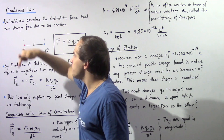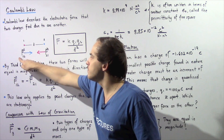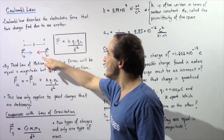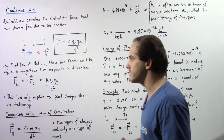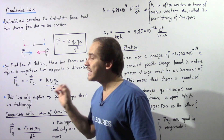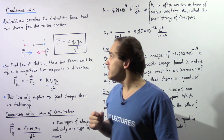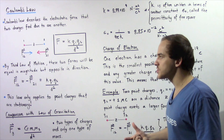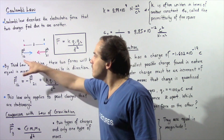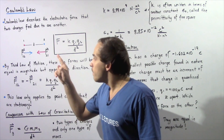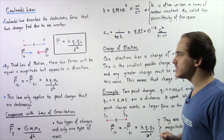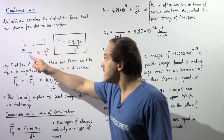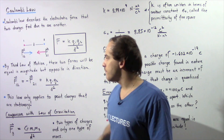The force that point charge 1 will feel as a result of point charge 2 is given by this quantity, and the force that point charge 2 feels due to point charge 1 is given by this quantity. In this case, our two electric charges are opposite, so they will attract one another and the force will be an attractive force. By Newton's third law of motion, these two forces will be equal in magnitude but opposite in direction — they are action-reaction forces.